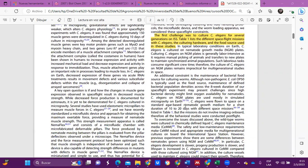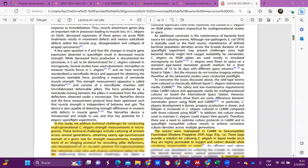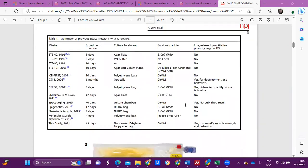The first challenge was to culture C. elegans for several generations on the station. This table lists the different spaceflight missions with C. elegans, the culturing hardware, and the food source used in these studies. In general, for these studies, the nematodes are maintained in C. elegans Maintenance Medium. However, their development progress is slower and lifespan is increased in comparison with nematodes cultured using the common medium.